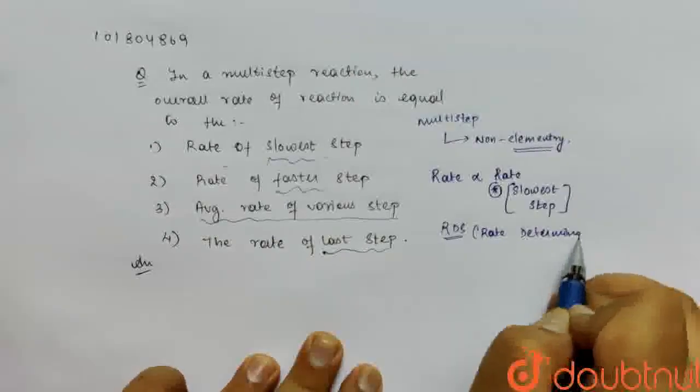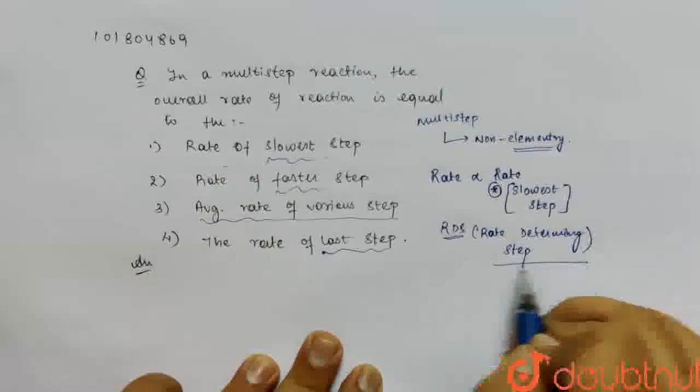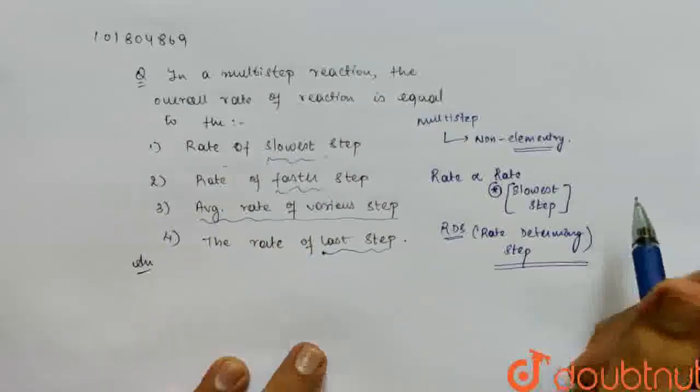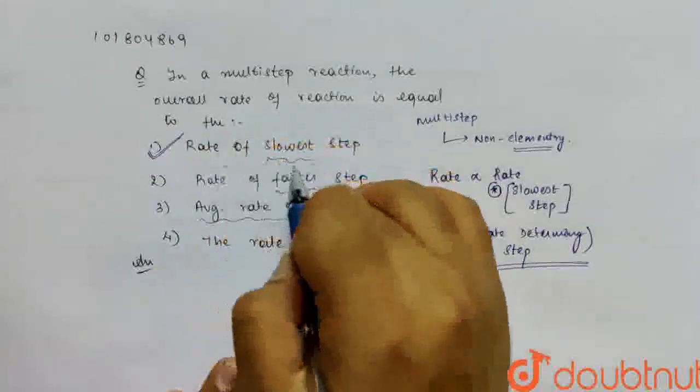So basically your reaction rate comes from the rate determining step. And that is directly proportional to the slowest step. So your correct option will be option number 1, Rate of the slowest step.